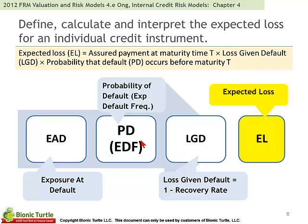Notice that we tend to use probability of default interchangeably with expected default frequency. Please take note of the fact that this is a Bernoulli variable — we either default or we do not. It's on or off. So in terms of random variables, it's analogous to a coin, and that means it's easy to calculate its variance. So this is the simple variable.